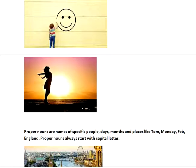The second category of a noun is called a proper noun. What are proper nouns? Proper nouns are basically names of specific people, days, months, and places. For example, Tom is the name of a specific person. Monday is a specific name of a weekday. February is a specific month of a year. England, Afghanistan, India, or Pakistan are specific names of countries. So whenever we want to represent any specific person, day, month, or place, we use a proper noun.